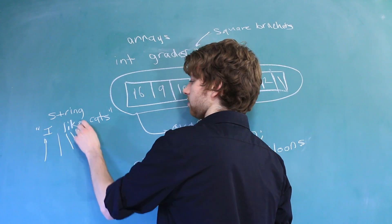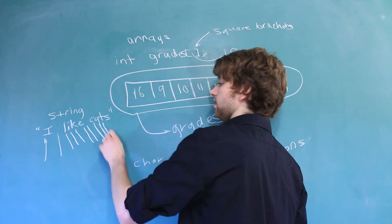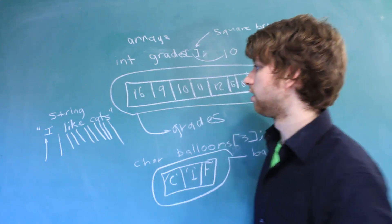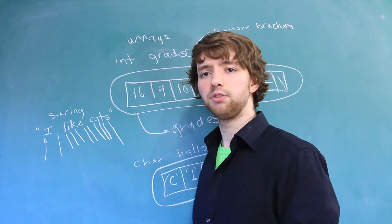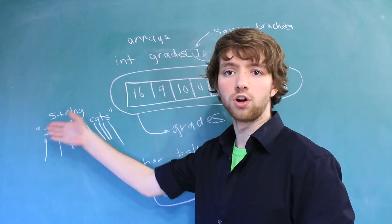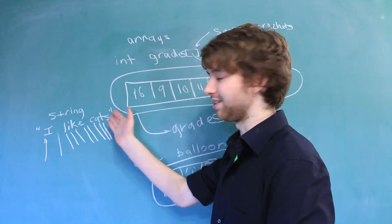Each one of these is a character. One, two, three, four, five, six, seven, eight, nine, ten, eleven characters. So, this is a string with eleven characters. And you can literally think of characters being strung together in a sequence.